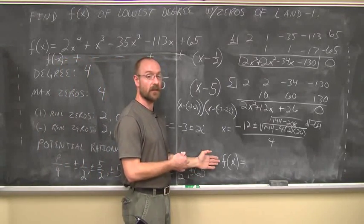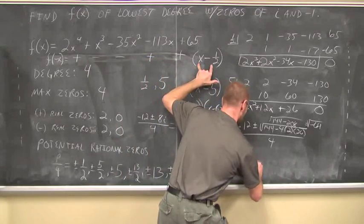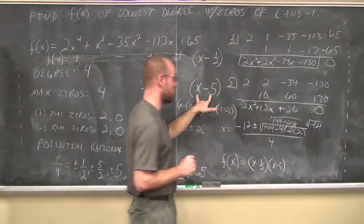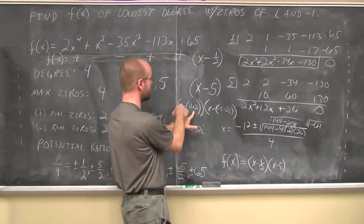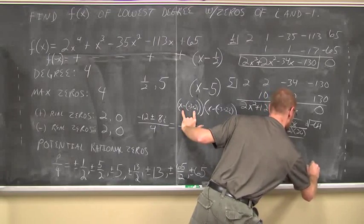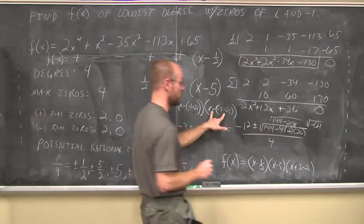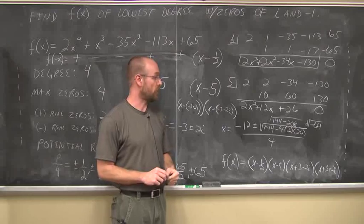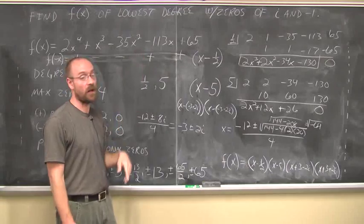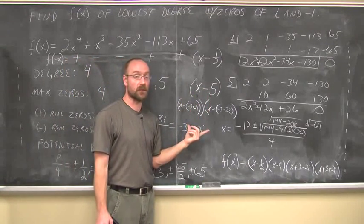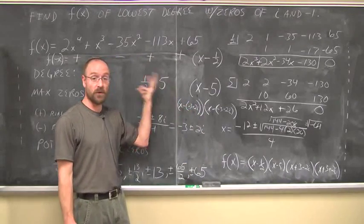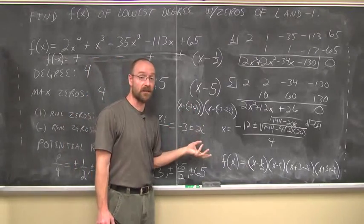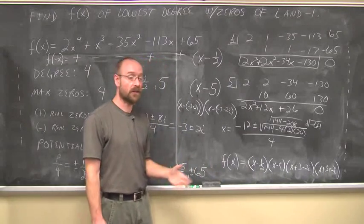Writing this as a product of linear factors: x minus 1 half, x minus 5, x minus the quantity negative 3 plus 2i — which distributes to x plus 3 minus 2i — and x minus the quantity negative 3 minus 2i — which distributes to x plus 3 plus 2i. We have four linear factors for a fourth-degree polynomial. It takes a lot of work, but we can solve higher-order polynomials with real or complex solutions by combining synthetic division, conjugate pairs, and the complex number system.